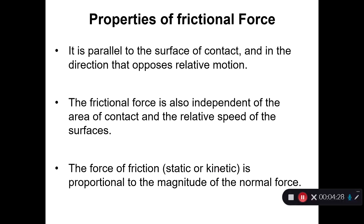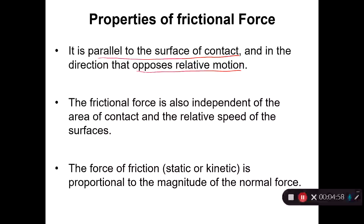From this we can see that the friction force is parallel to the surface of contact and always acts opposite to the direction of motion. Also, frictional force is independent of the area of contact and of the relative speed between the two surfaces. However, it does depend on the nature of the surfaces — wood on steel, wood on carpet, or wood on clay all give different frictional forces, but the area of contact does not matter.